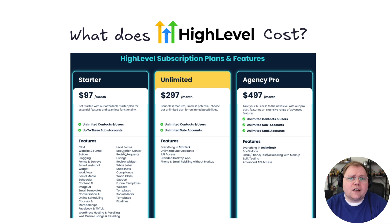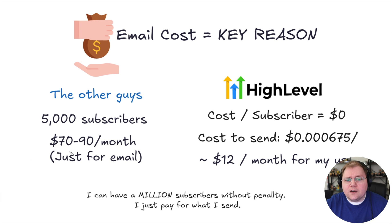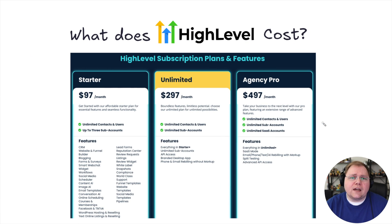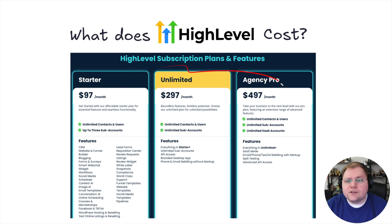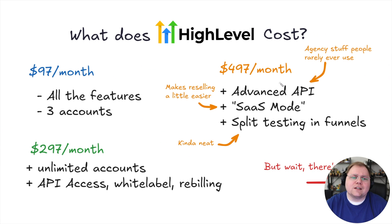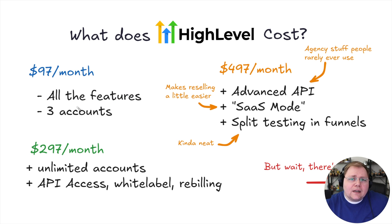Now let's talk about what High Level actually costs, because there is a fixed cost. I want to be transparent: High Level has three plans you can choose from, with some add-ons like better support and HIPAA compliance. The starter plan is $97 per month, then $297 per month, and $497 per month. The $97 per month plan gives you basically all the features you'd want — everything I talked about, everything High Level does — all of that is in the $97 per month plan.